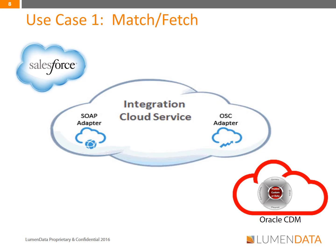Let's look at the first use case, which is Match Fetch from Salesforce.com. For a CRM solution to be valuable, a clean 360-degree view of the customer is necessary. Our Match Fetch application will enable you to search and match in the master repository from Salesforce.com to prevent duplicate creations, and then to sync the customer record in Salesforce.com with the master data repository. First, we'll illustrate this process, then show you what it looks like in the application. In this example, we'll try to create a new contact record for a customer, Will Smith, in Salesforce.com.